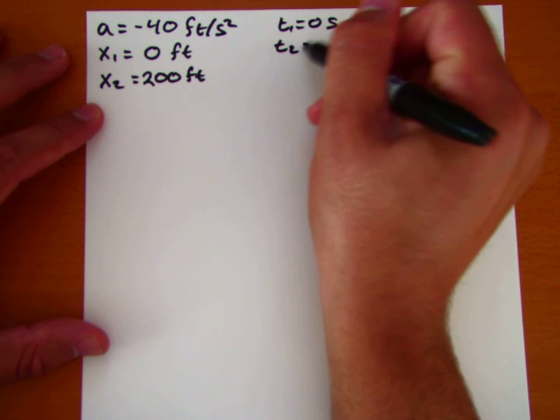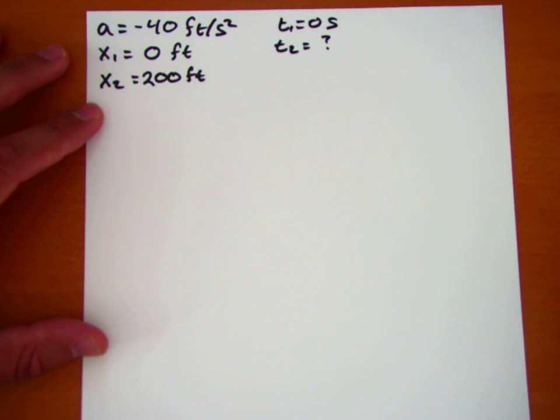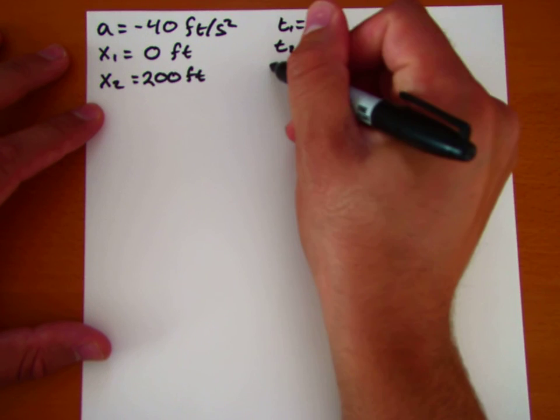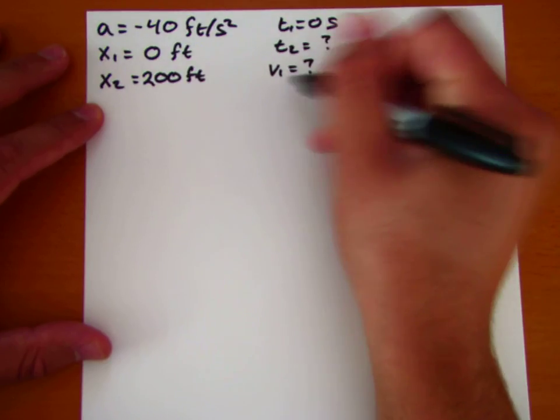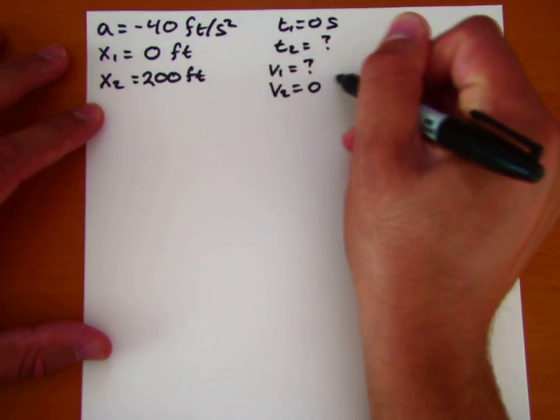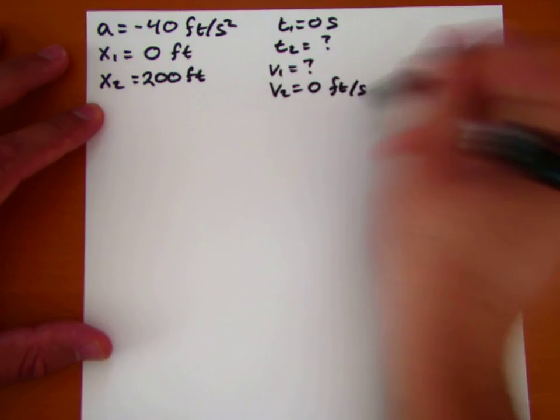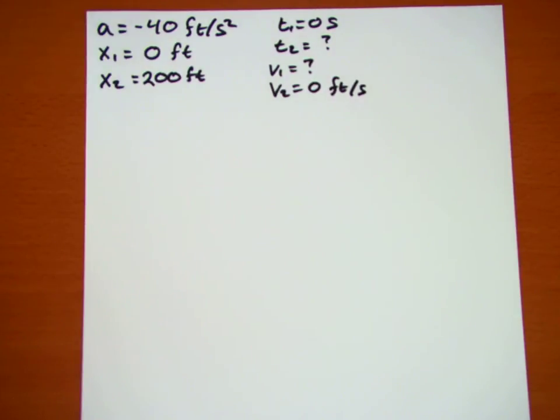The final time, we're not quite sure about that yet, but we're going to be able to calculate that. And similarly we don't know what the initial speed of the car is, but we do know that the final speed of the car is going to be equal to zero feet per second. So that's what we know.